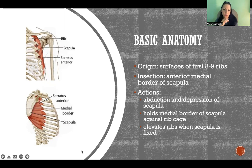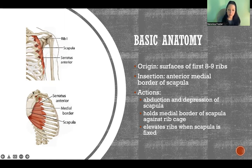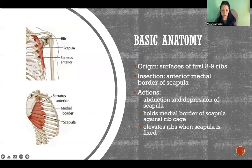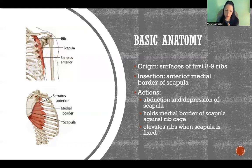It originates on the surfaces of our first eight or nine ribs, and then it goes deep to the scapula — so anterior to the scapula — and it inserts on the anterior surface of the medial border of the scapula. It's important to keep in mind where this muscle is located and where it inserts to be able to understand its actions.